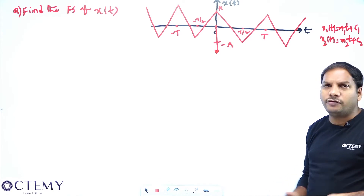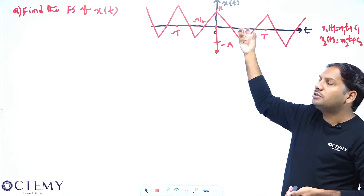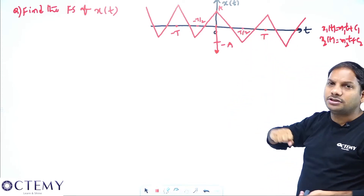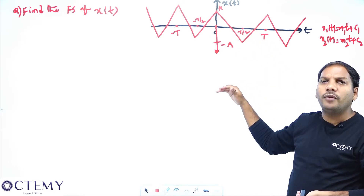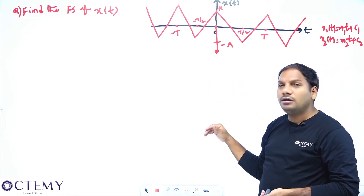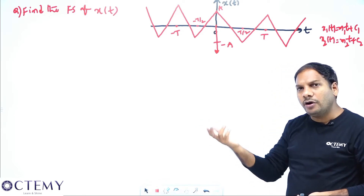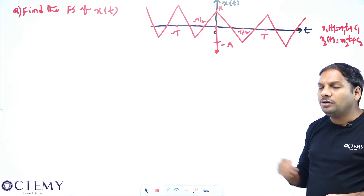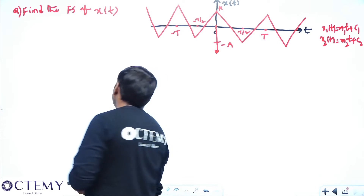I will try to apply the differentiation property. If I apply differentiation, the triangular wave will become a square wave. If you differentiate the square wave once again, you will get impulses. And the Fourier series of an impulse train is simply 1/T_s. So that is the procedure we will follow.